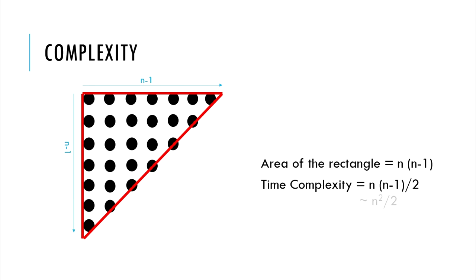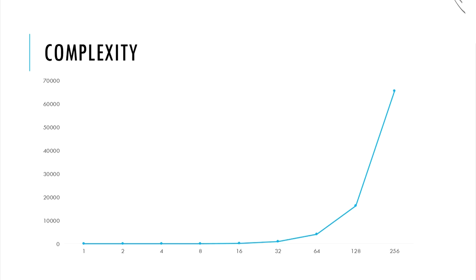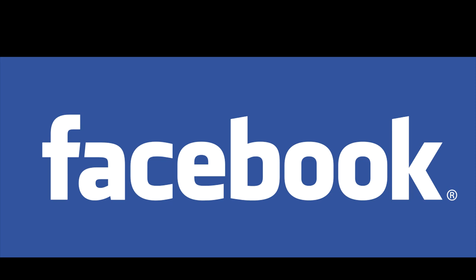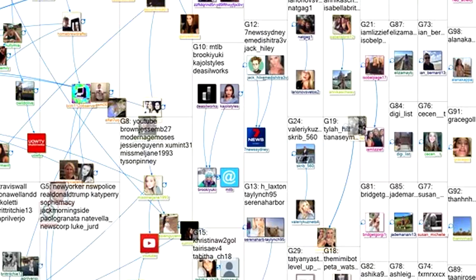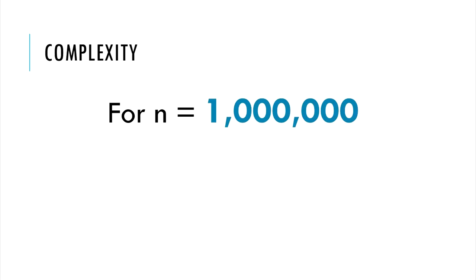A n-square time complexity is not very practical in the modern world. A social networking site, for example Facebook, has millions of users. Obviously, they need to have their users sorted for all their other algorithms. If they were to use bubble sort for sorting, they would have to do 1 trillion iterations.